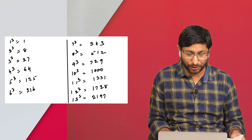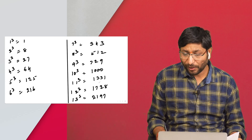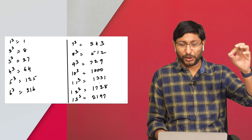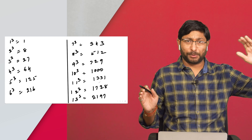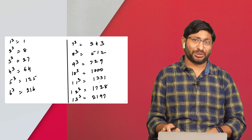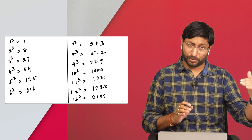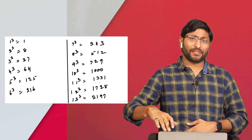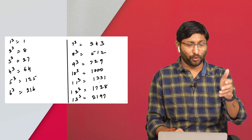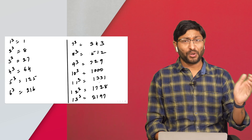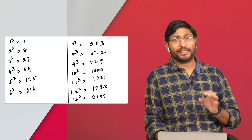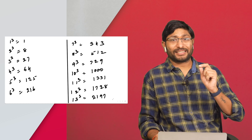To solve cube roots, you need to learn 1 cube to 20 cube. If you are aware of 1³ to 20³, you can solve cube roots of up to 6 or 7 digit numbers. Please pause the video and write down 1³ to 20³ on paper: 1³=1, 2³=8, 3³=27, 4³=64, and so on up to 20³.